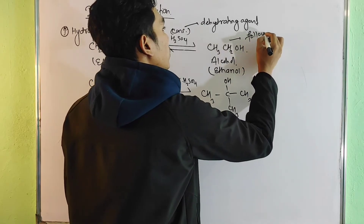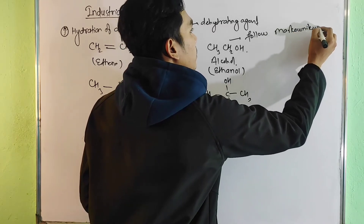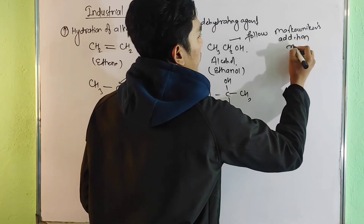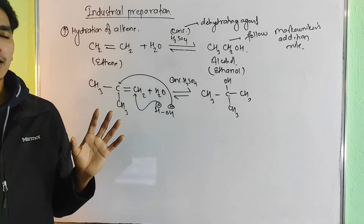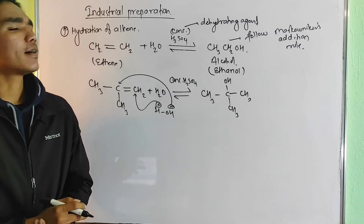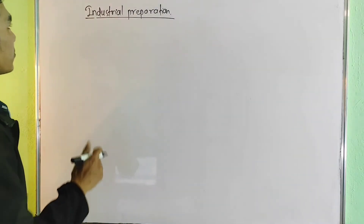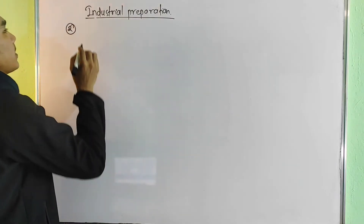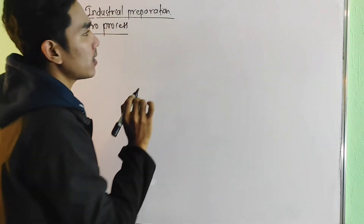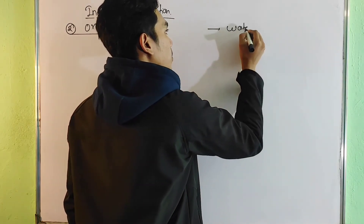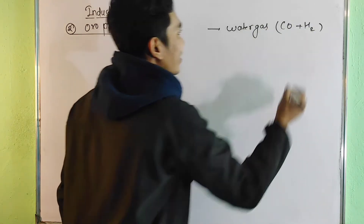Hydration of alkene follows Markovnikov's addition rule. This follows Markovnikov's addition because of carbocation formation — the chances of electrophilic addition reactions and carbocation stability determine the product. The hydrogen adds to the carbon with the highest number of hydrogens, according to Markovnikov's rule.